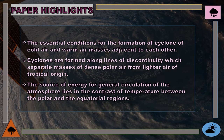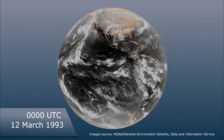This paper also highlights the following: first, the essential conditions for the formation of cyclones are cold air and warm air masses adjacent to each other. Second, cyclones are formed along lines of discontinuity, which separate masses of dense polar air from lighter tropical air. Lastly, the source of energy for the general circulation of the atmosphere lies in the contrast of temperature between the polar and equatorial regions. To illustrate how cyclones form, here is a video by Dr. David Schultz from the University of Manchester.